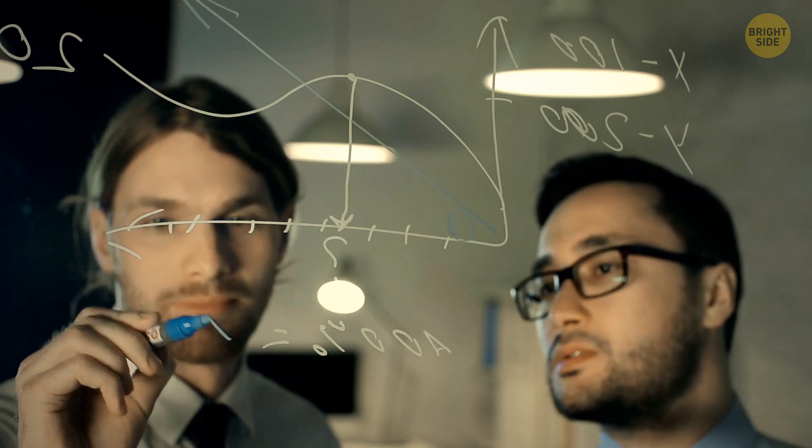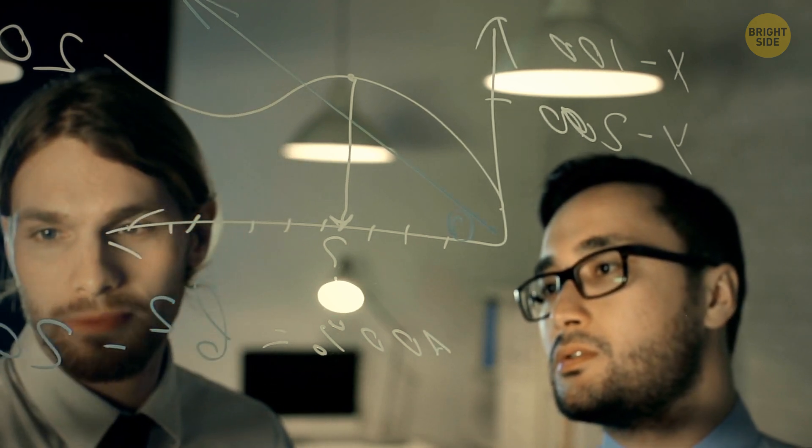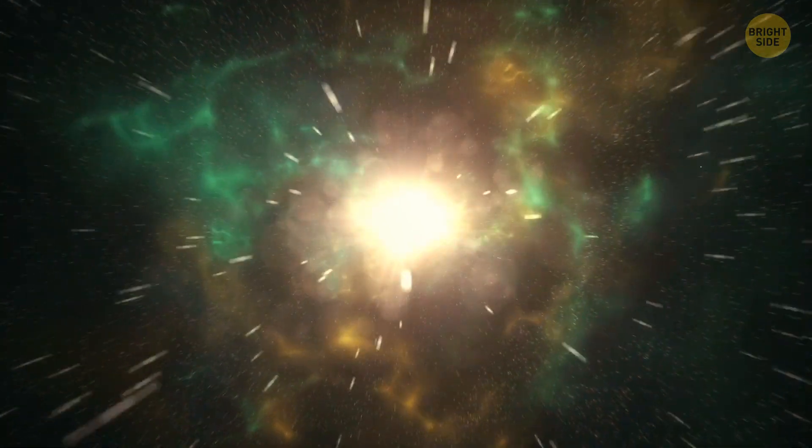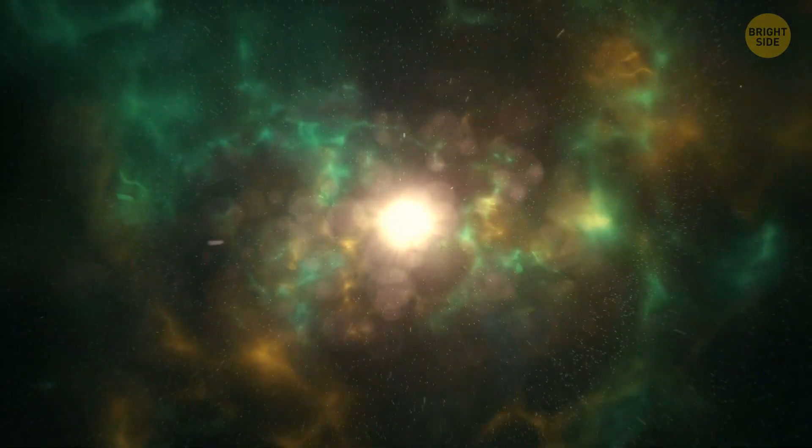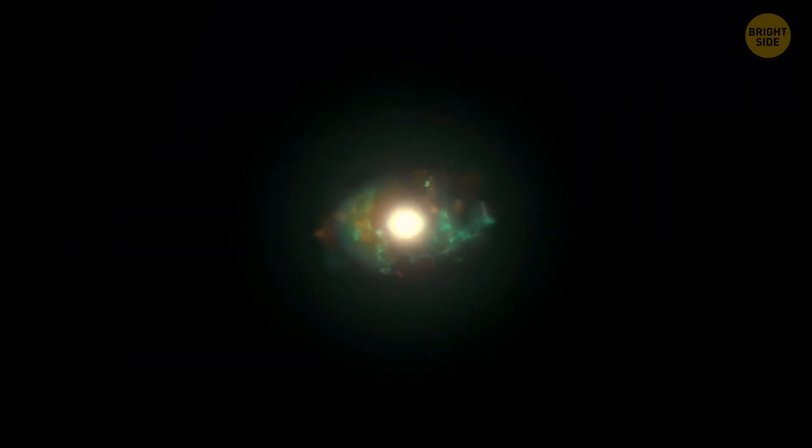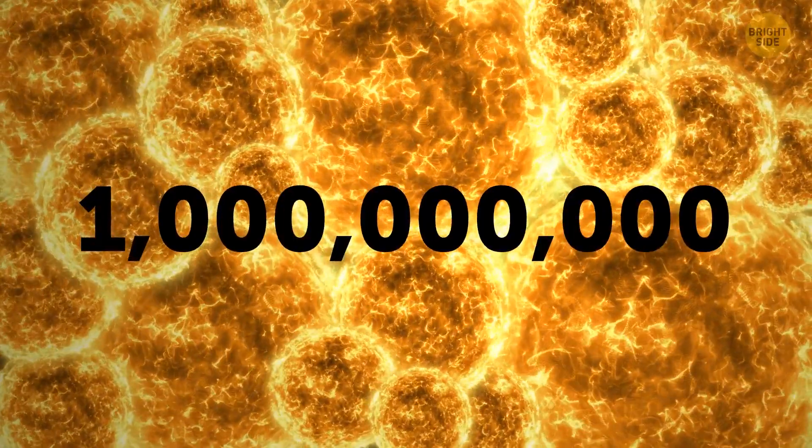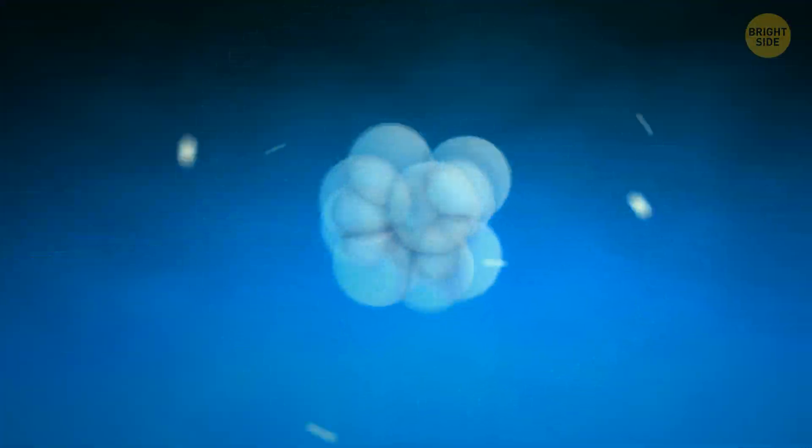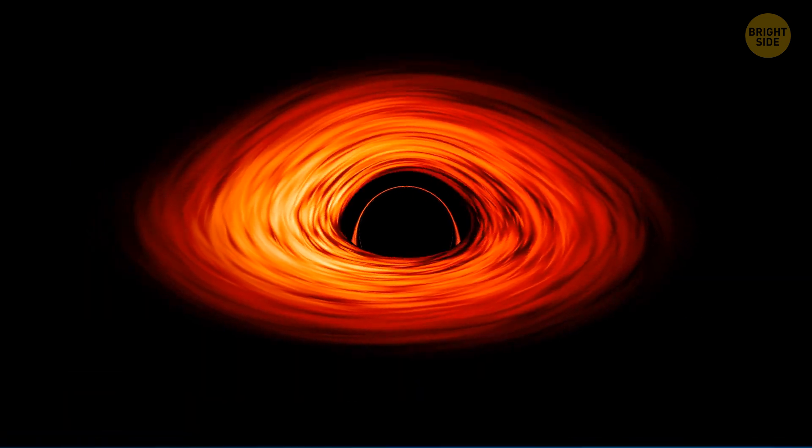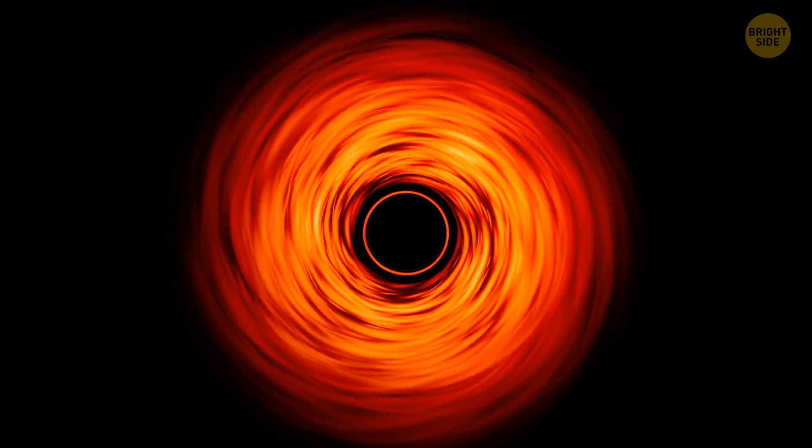Some scientists believe that we're all living inside a huge black hole. Everything in the universe started with the Big Bang. But there's a theory saying there was also something before that. It was a super-dense seed that had all the mass and energy of the universe concentrated in it, about as heavy as a billion suns. It was a trillion times smaller than any particle humans can observe. This seed could be born inside a black hole.